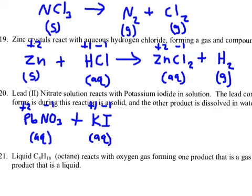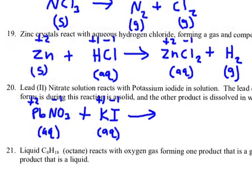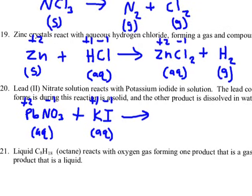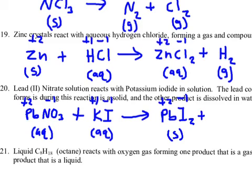The lead compound that forms is a solid. So Pb (plus 2) combines with iodine (minus 1) — we swap, it's a one-to-two ratio: PbI₂ — and I was told it's a solid, so I put S. Plus the other product is dissolved in water: K (plus 1) with NO₃ (minus 1) — those cancel out one-to-one — AQ.